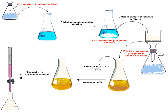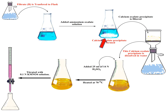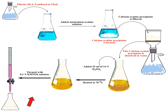The whole process is shown here in a colourful picture. Filtrate B is transferred to a flask and ammonium oxalate solution is added. The calcium present in the sample precipitates as calcium oxalate. This calcium oxalate precipitate is filtered, then dissolved in water with 25 ml of 1:4 normal H₂SO₄. The solution is heated at 70 degrees centigrade and titrated with 0.1 normal KMnO₄ solution. From the titration reading, we can calculate the amount of calcium present in the face powder.